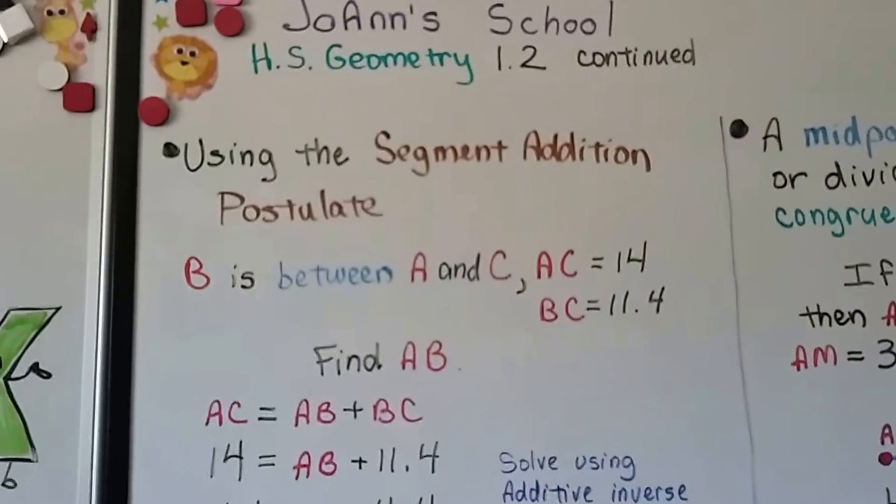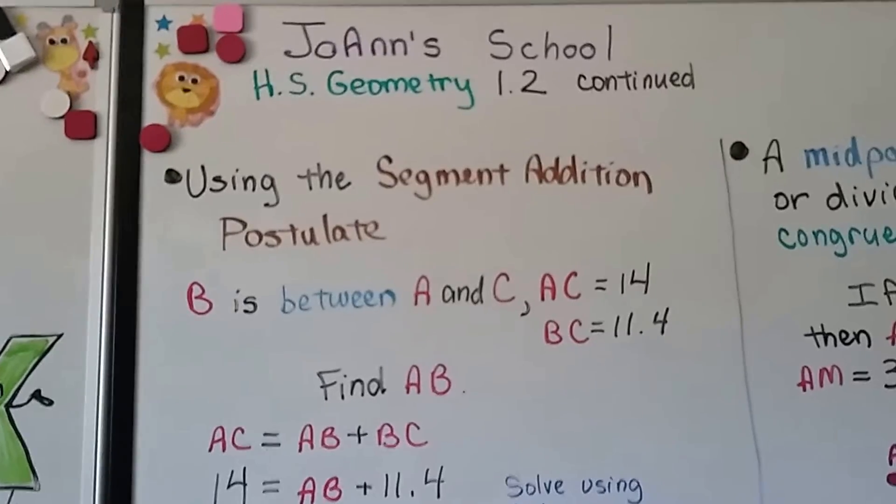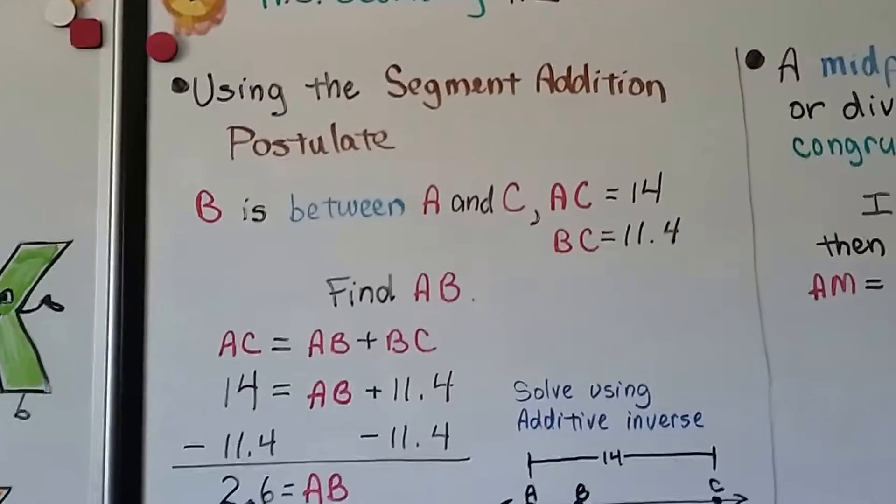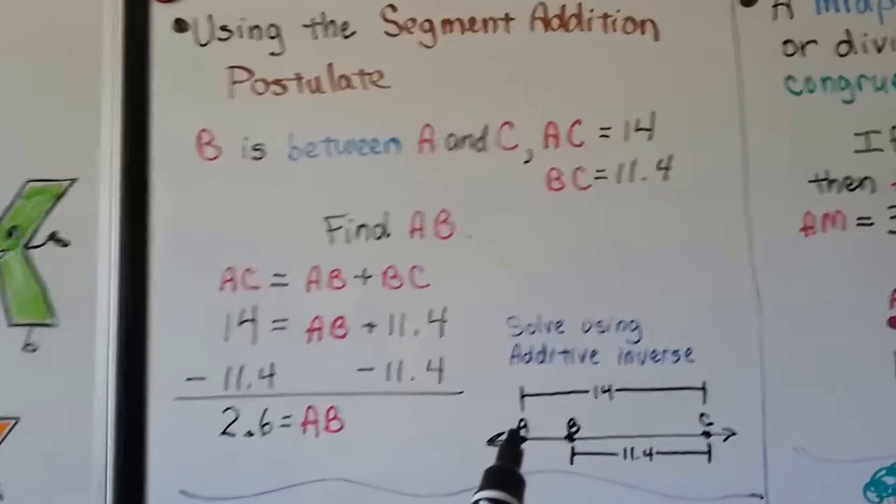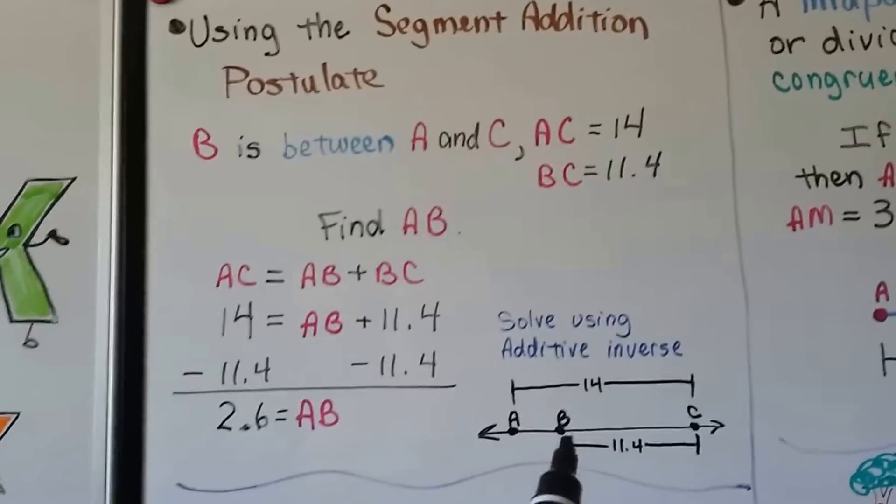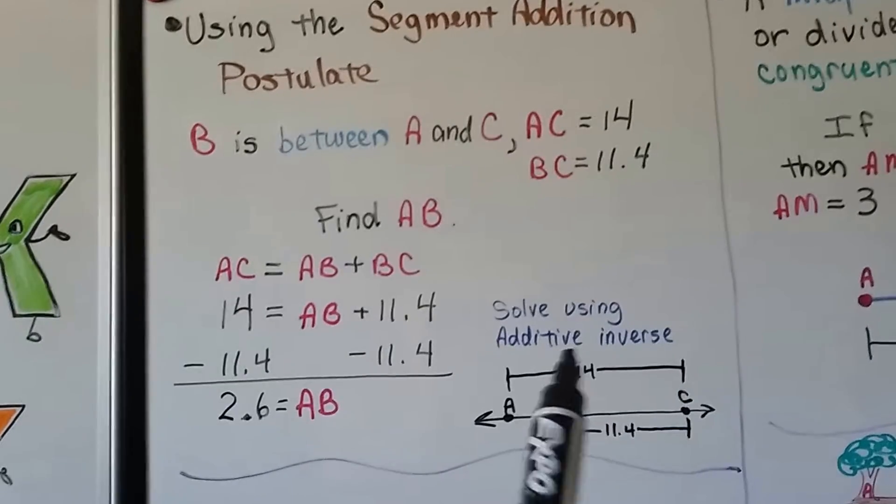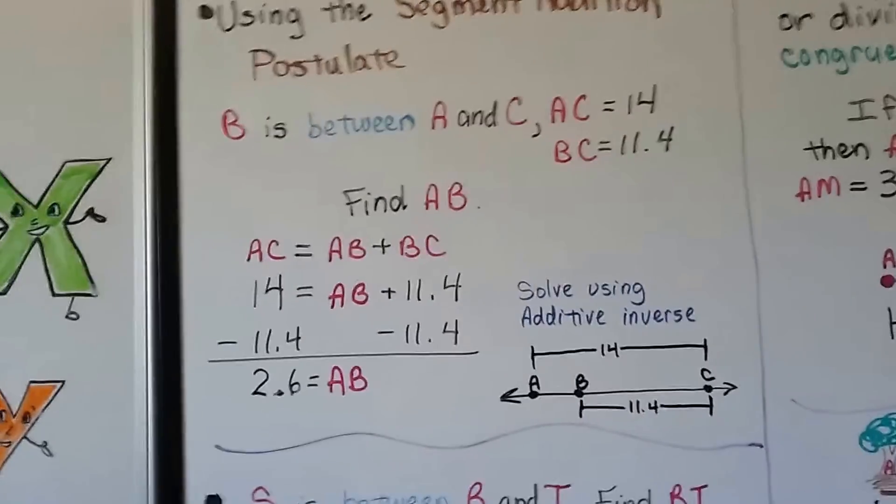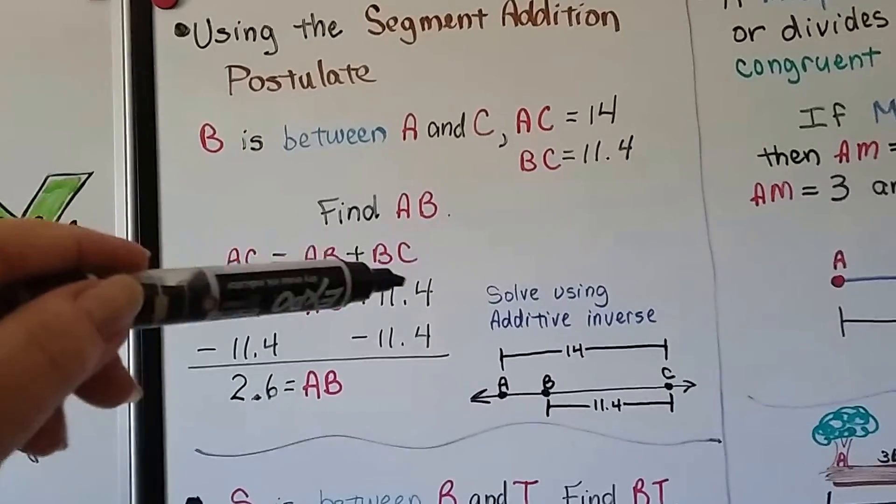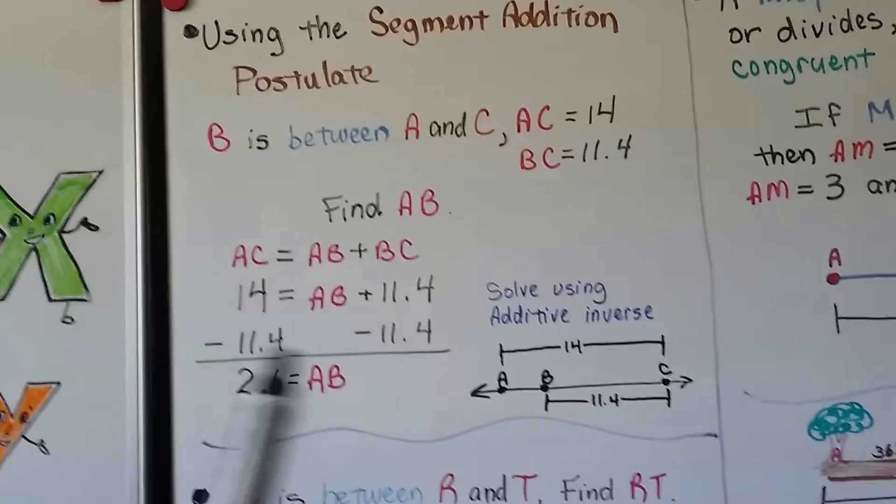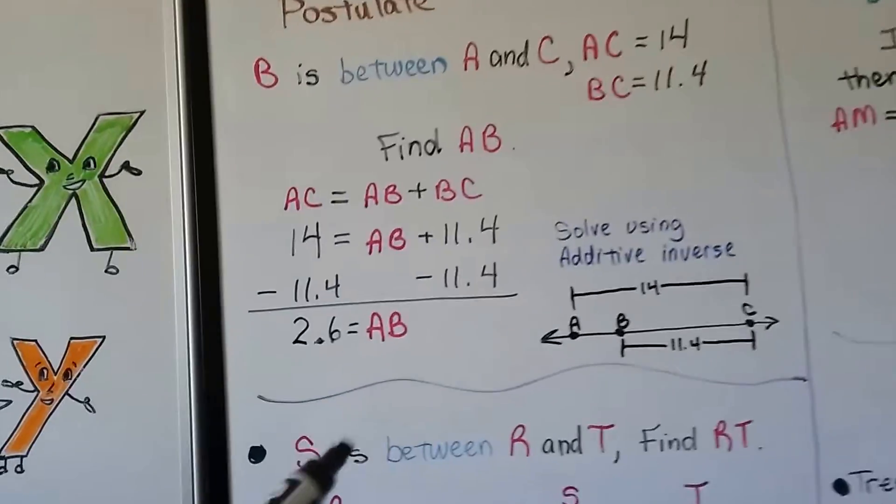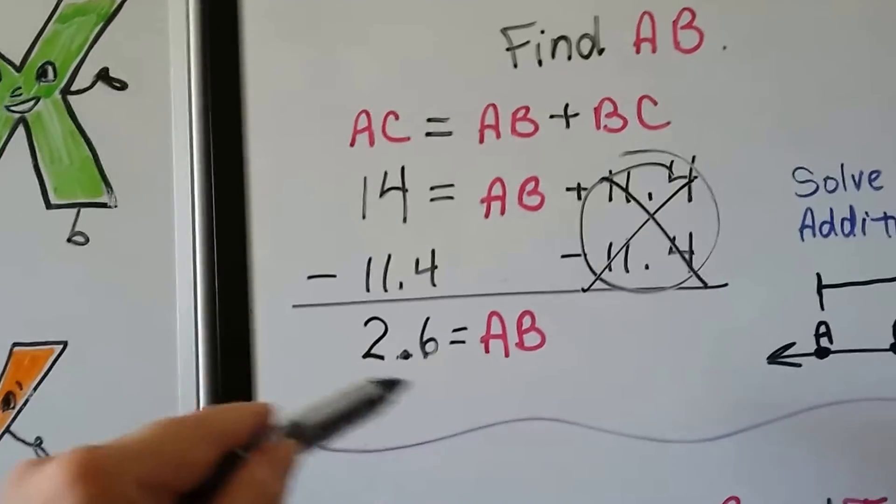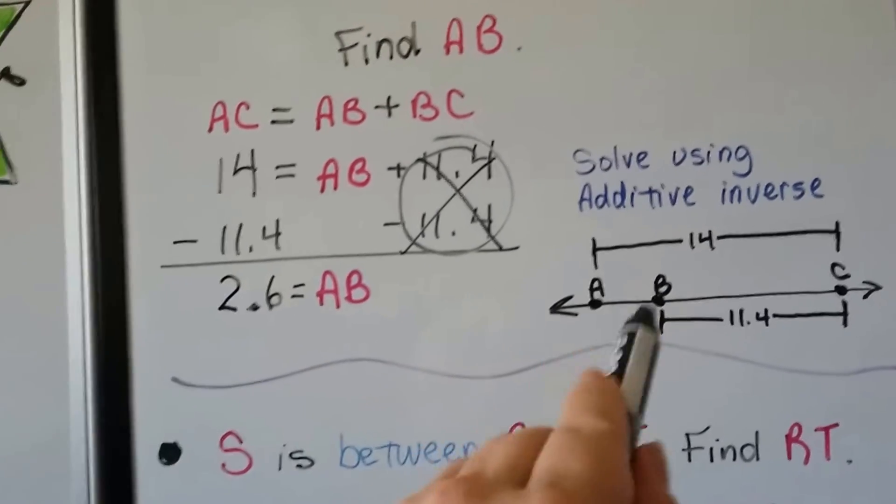Using the segment addition postulate, B is between A and C. And it tells us that AC is equal to 14 and BC is equal to 11.4. They want us to find AB. So you could even draw a little picture to help yourself out. We know that B is in between A and C. So here it is on the line. We know AC, the big distance, is 14 and B to C is 11.4. It wants us to find this little piece AB. We can do it with algebra. AC is 14. We don't know what AB is. BC is 11.4. We can add a negative 11.4 to both sides of the equation, which makes this a zero pair, doesn't it? So this is gone. 14 minus 11.4 is 2.6. Our AB drops down. We know AB is equal to 2.6. This little area right here is 2.6.